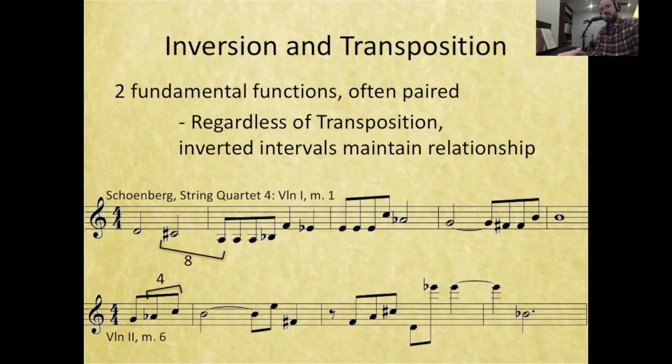8 plus 4 gets us to 12. We can see C sharp down to A natural has a lot in common with A flat up to C natural, because they are inversionally related. If we look at those first three notes in the violin one part—2, 1, 9—